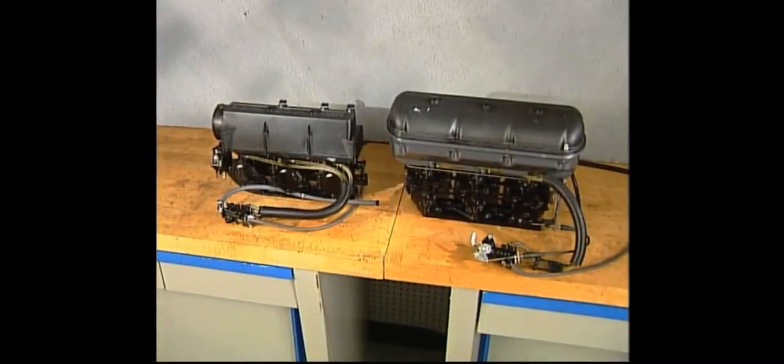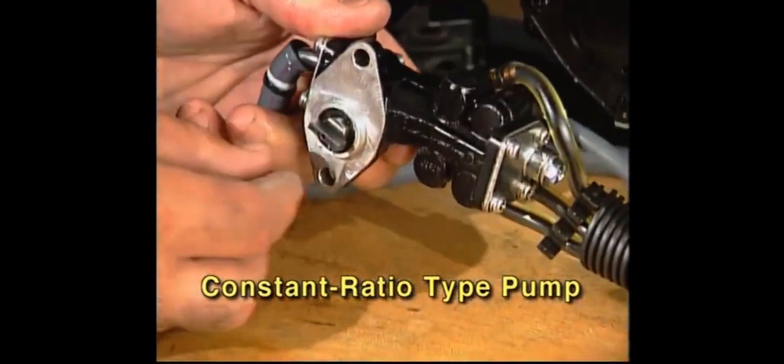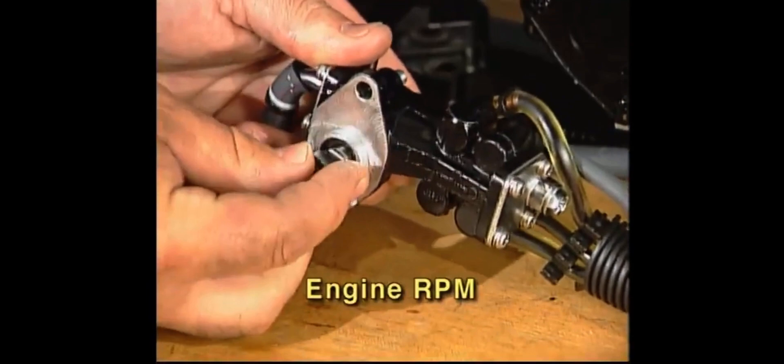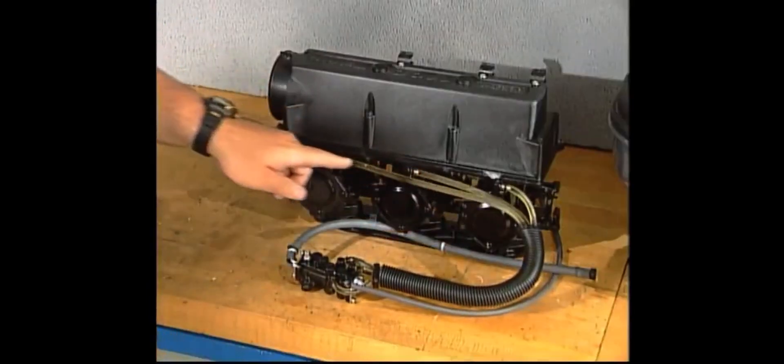There are two different ways an AutoLube type pump can meter the oil. The constant ratio type pump bases its output solely on engine RPM. Pump output increases as RPM increases in a constant ratio.